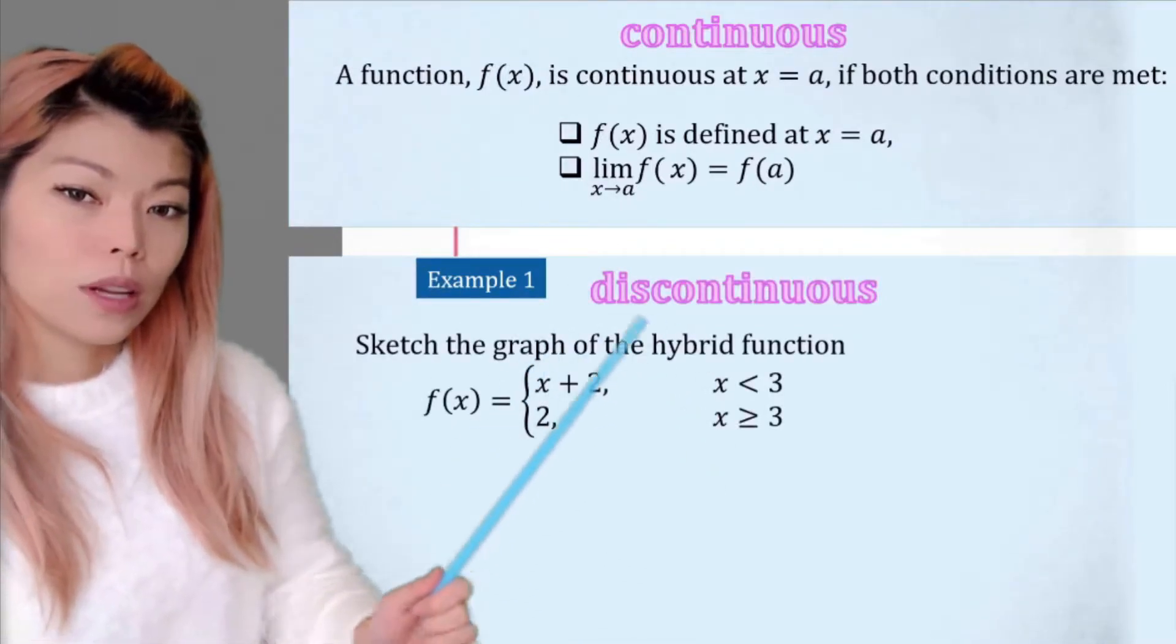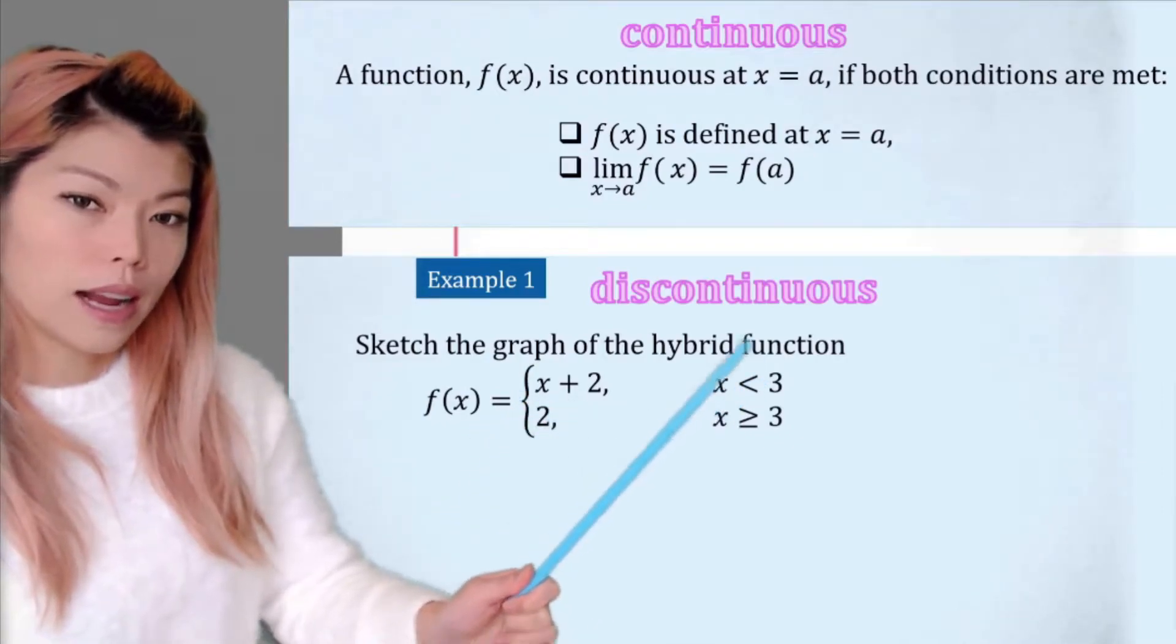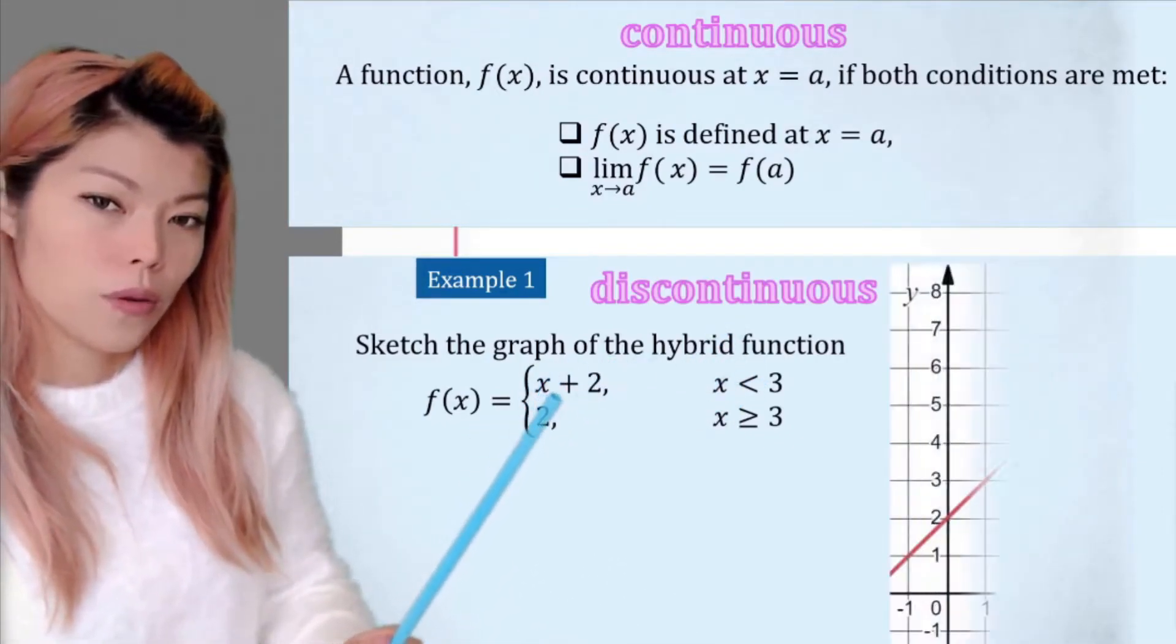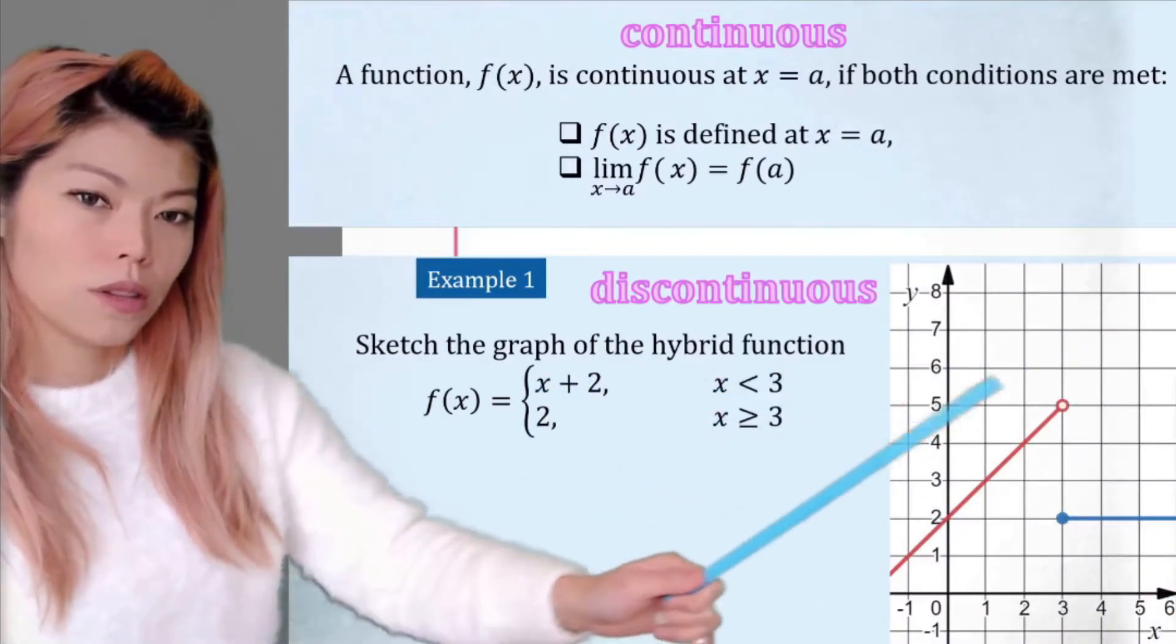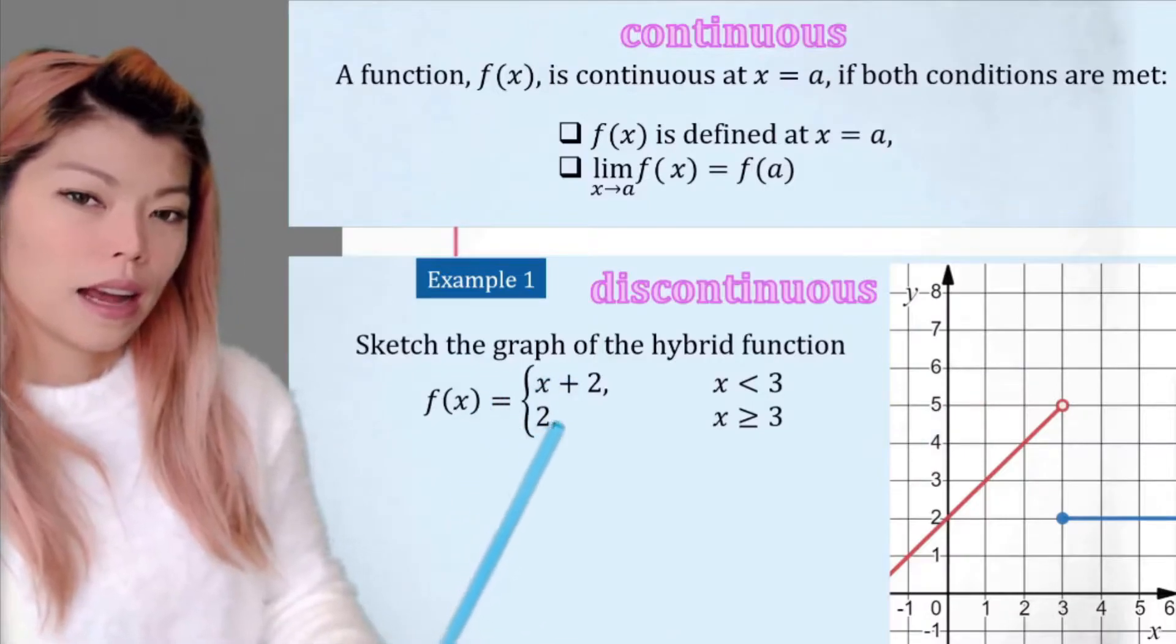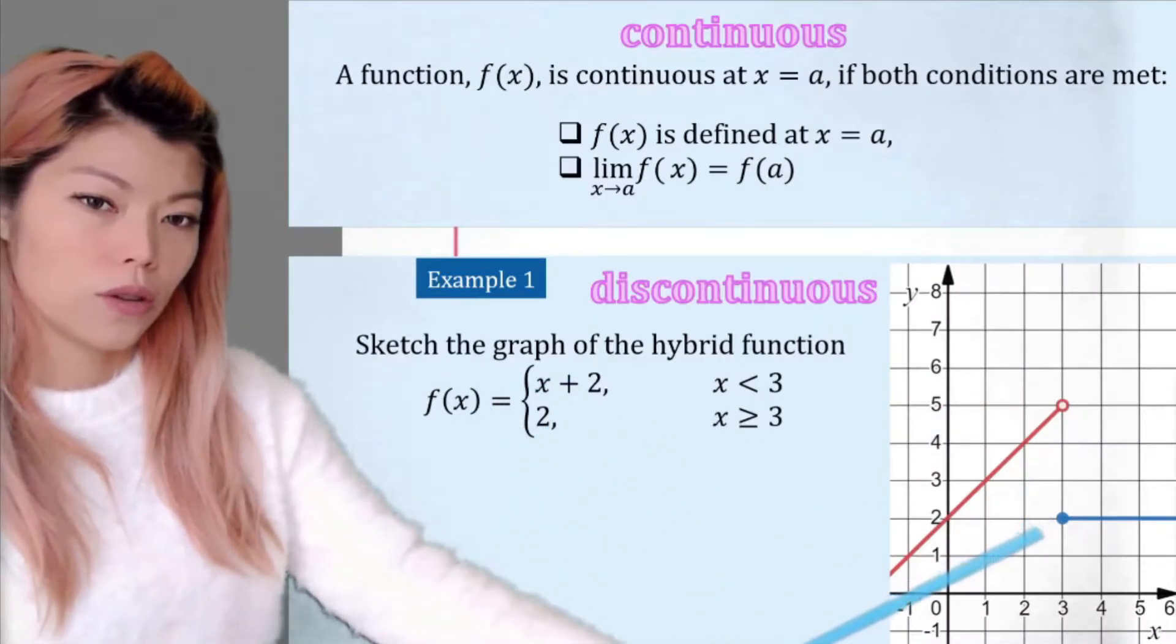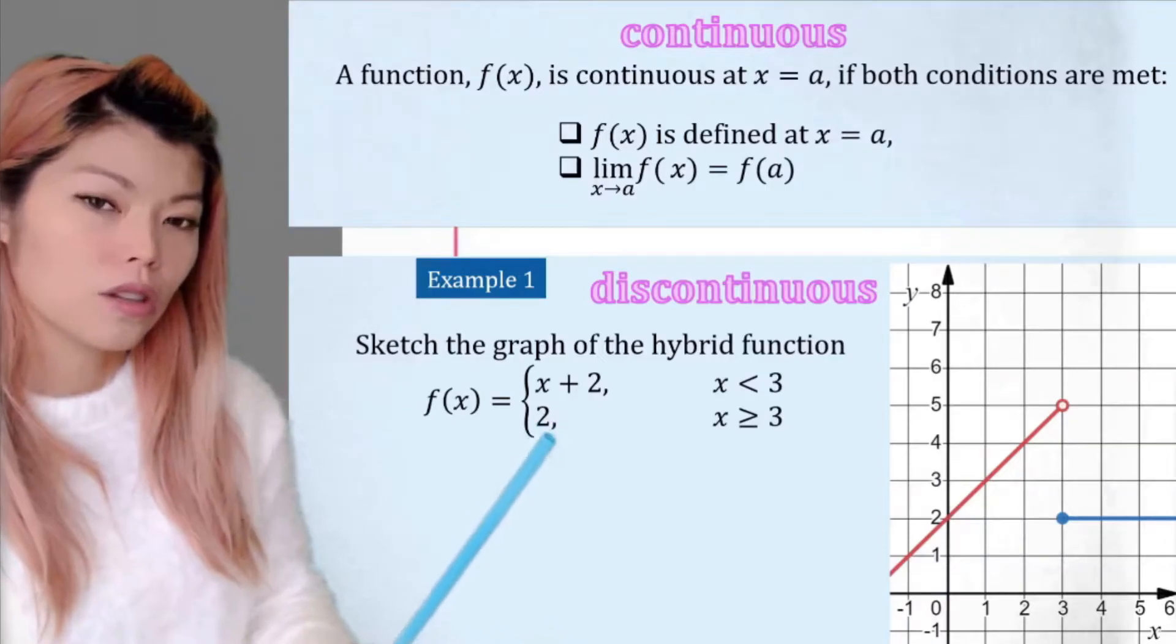For this example here, we can sketch the graph where at x less than 3, we have x plus 2, this red line here, and because there's no equal sign, that dot is empty. For x greater than or equal to 3, so the dot is filled, we have the line y equals 2.